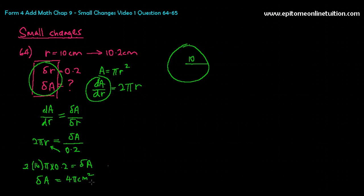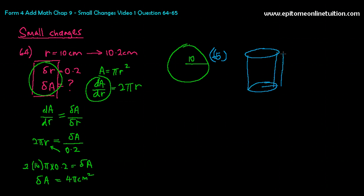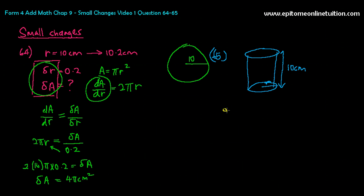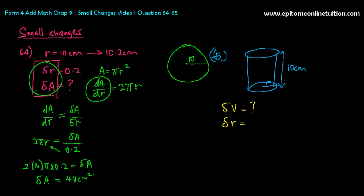Let's look at question 65. The height of a cylinder is 10 cm and its radius is R. Find the approximate change in its volume if the radius decreases from 7 to 6.95. That means you're looking for delta V. The change in radius, delta R, is negative 0.05 — it's negative because it decreases.